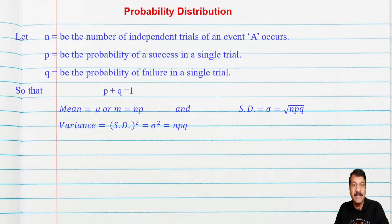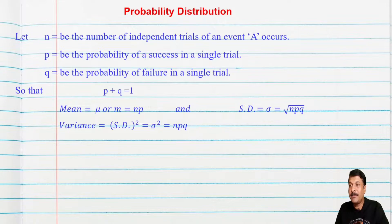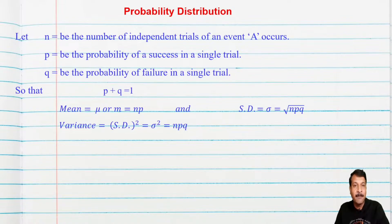Before starting probability distribution, remember: n denotes the number of independent trials of an event A occurs, p is the probability of success in a single trial, and q is the probability of failure in a single trial. Success means what we want to find; failure is q. Always remember p plus q equals 1, meaning 100 percent total.